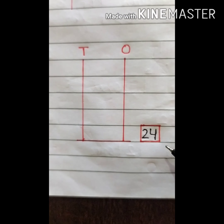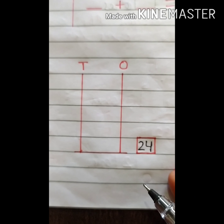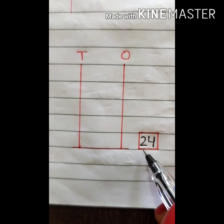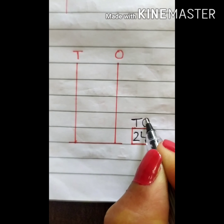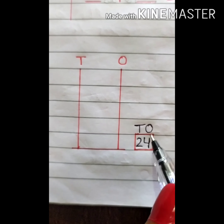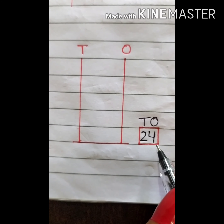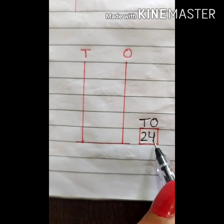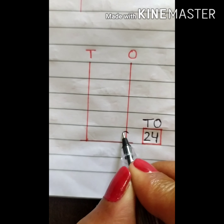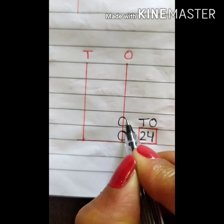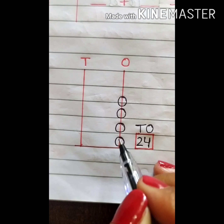Now we have to show number 24 on the abacus. Again we have to draw beads. We will write T and O to check how many ones and tens are there. The number at ones place is 4, so we have to draw 4 beads: 1, 2, 3, and 4. We have drawn 4 beads in the ones place.